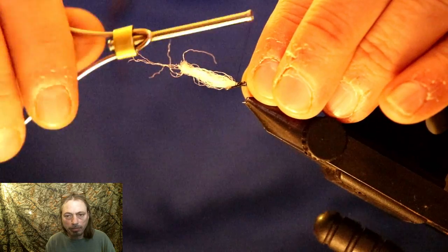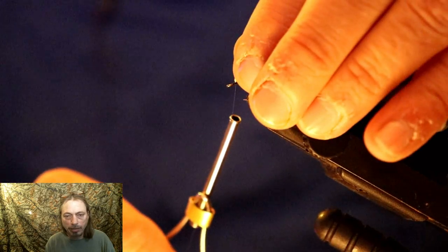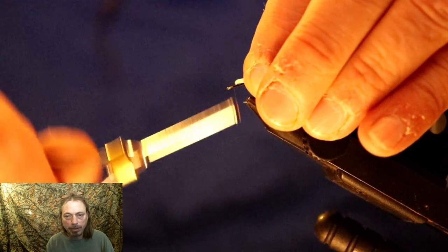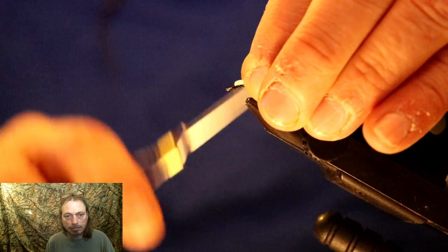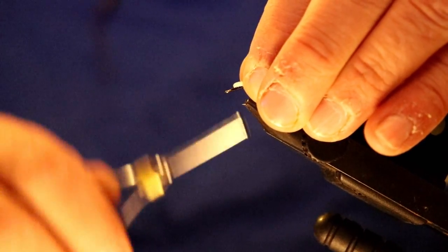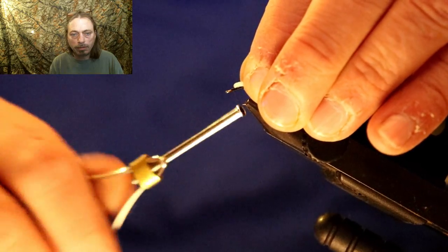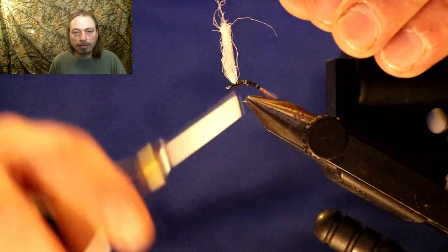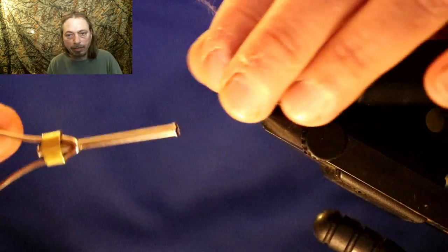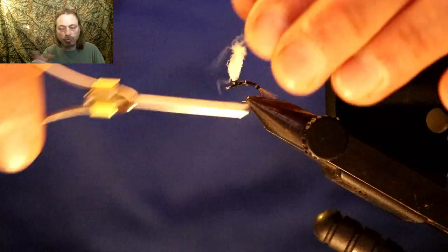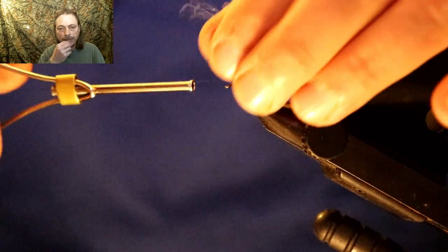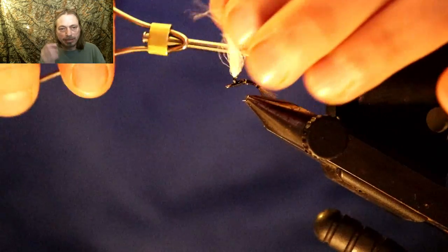If we want to move our post up a little closer to the eyelet, we just add some thread wraps behind and up towards the eye, then pull it back. When you add thread wraps in front of it, it'll stand right up.